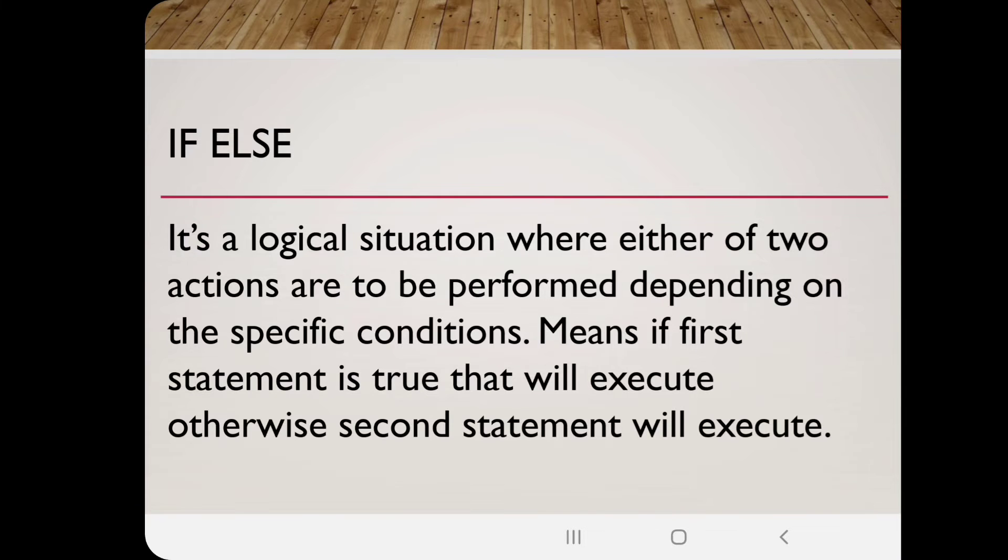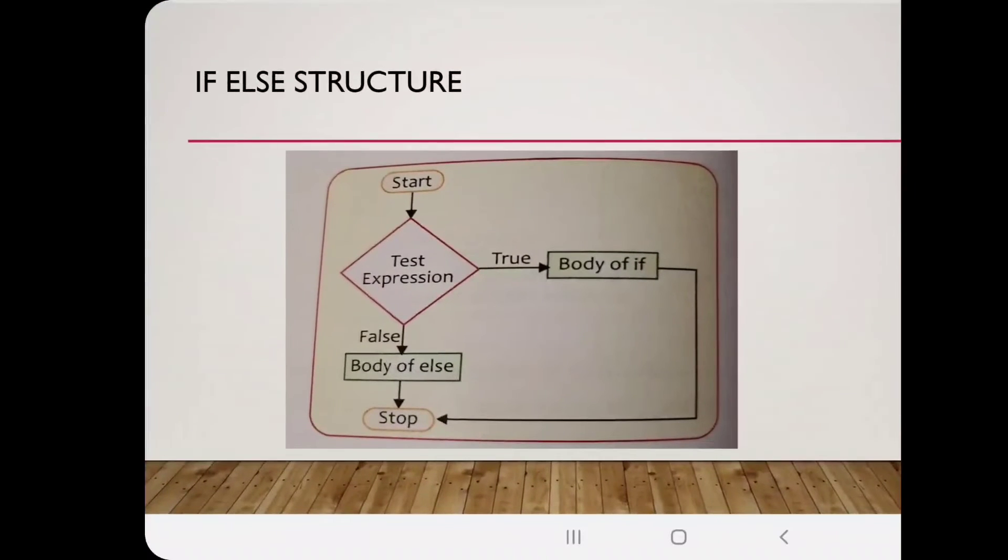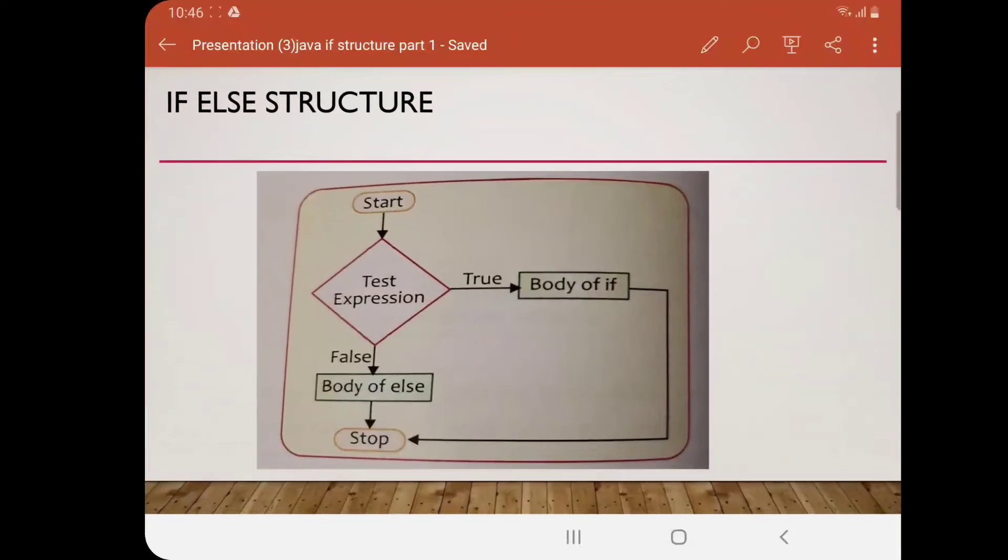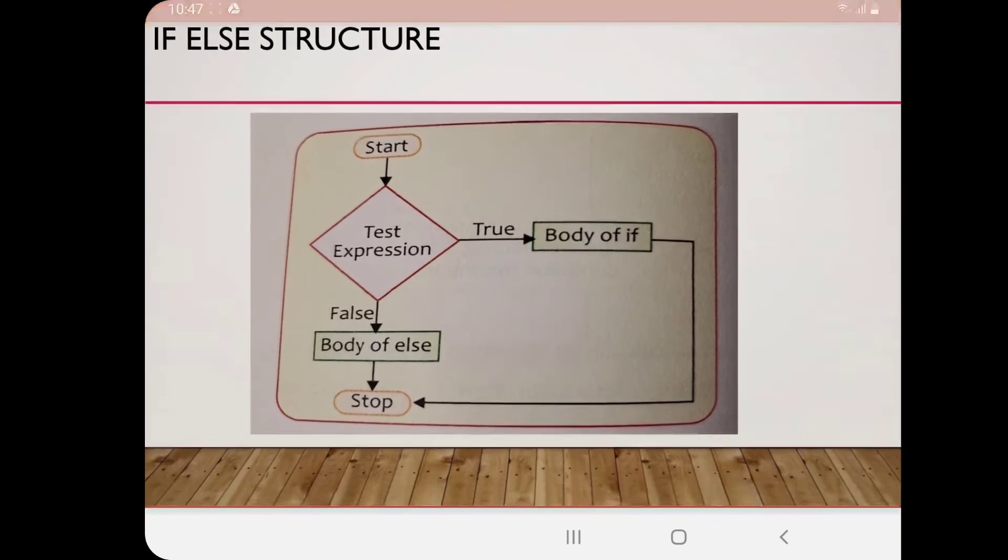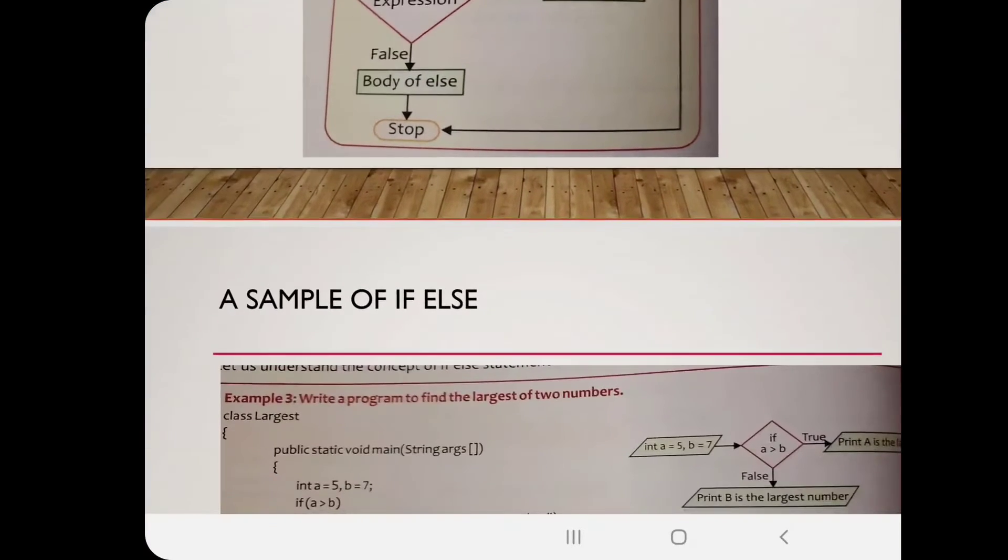This is the structure when we are writing the programs. See, the program started and there is a test expression where we put the condition. You can see both will be printed. We have two output structures, two output structures for true also and for false also. But in the if statement, we have seen only one, and the false one went to stop. But in this one, you can see you put a condition, and if that condition is true, its body will come, and if it's false, its body will also come. We have two output structures in this.